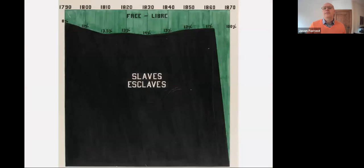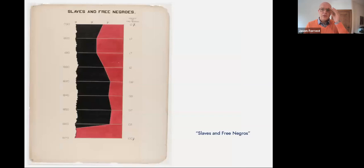The story it tells is simple: for 76 years, no less than 86 percent of all African Americans in the United States were slaves. But the nuanced story remains on the right side of the chart — the Emancipation Proclamation was signed on January 1st, 1863, yet it takes an additional seven years and an entire Civil War for the remaining 6 million and 675 thousand slaves to gain their freedom.